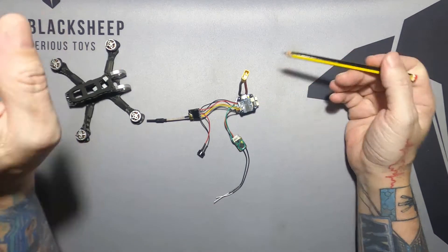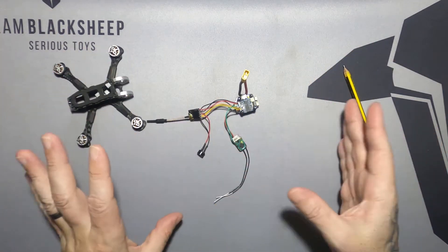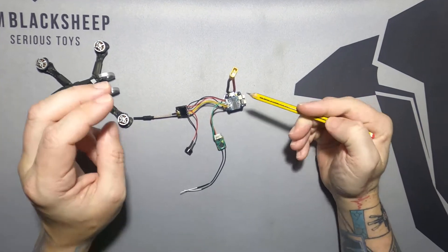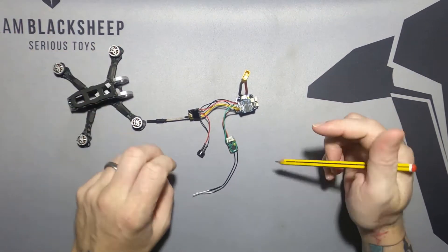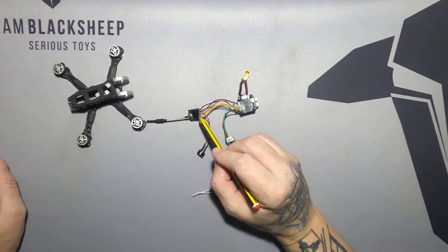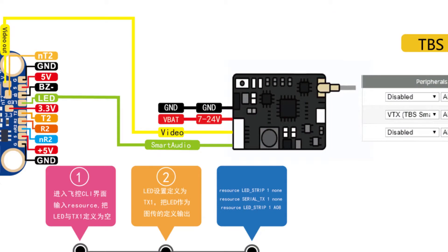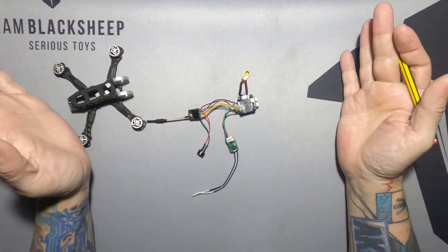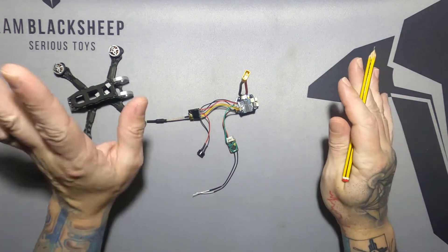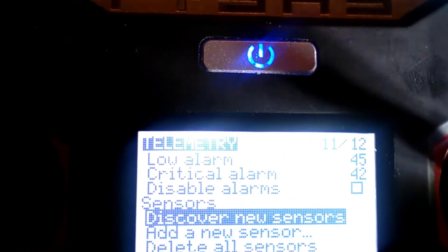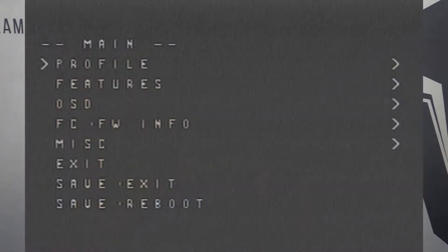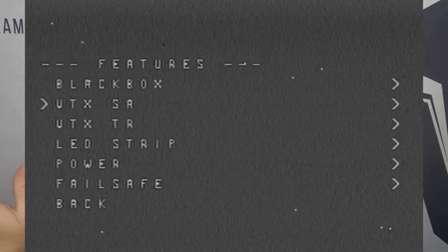You might have it standalone or one of the other F4s from iFlight or something similar. According to the instruction manual, you just wire your F-port to the NT2 pad and smart audio to the LED pad, configure it, input the CLI commands as stated, and everything works. It's far from that - it doesn't. F-port would work with the controls but I couldn't get telemetry, and smart audio wasn't working with their configured settings.